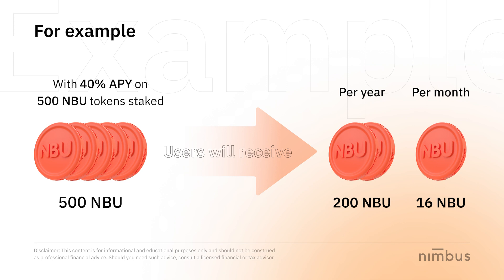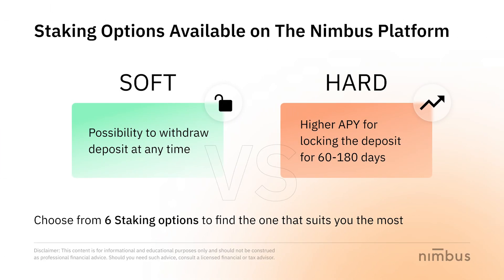Now, what are the different staking options available on the Nimbus platform? Nimbus platform offers two types of staking: soft staking and hard staking, with a reward of up to 40% APY. Please note that the APY level may change depending on market conditions and decisions of the Nimbus DAO.